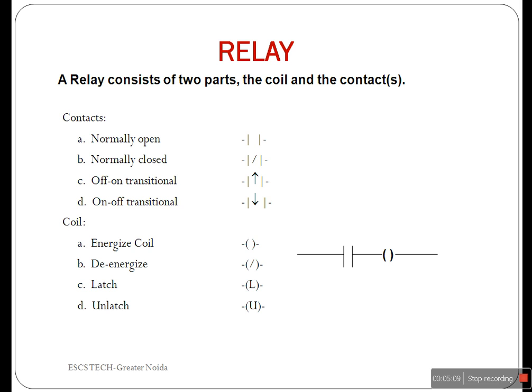Power is always set to flow from left to right. Power flows through an open or closed contact depending on the input condition, and if power can get to an output device, it is turned on. Contacts are always on the left side of the ladder and the output devices are always on the right side. The contacts and output devices can either be real input and output connections on the PLC or special functions in the ladder program.